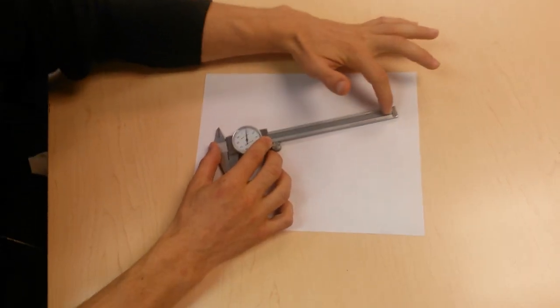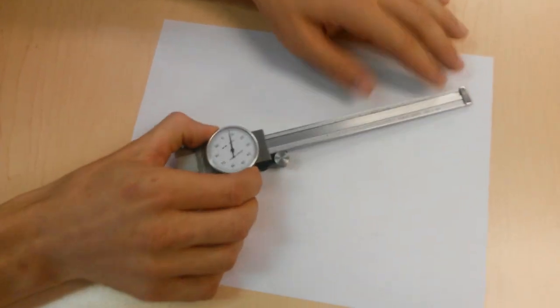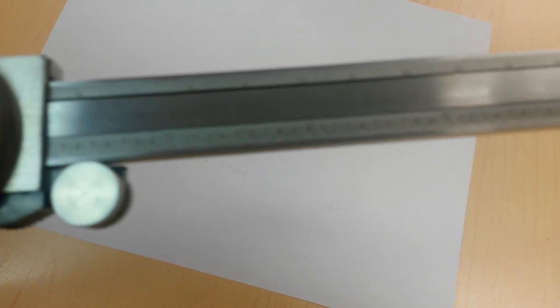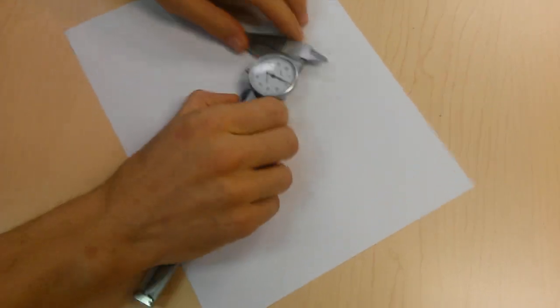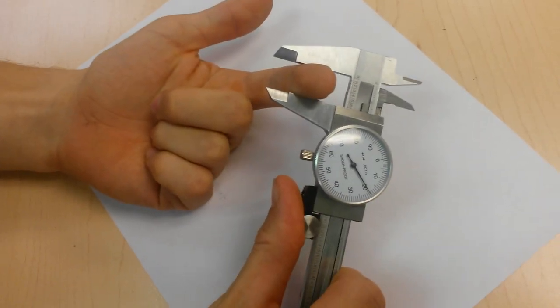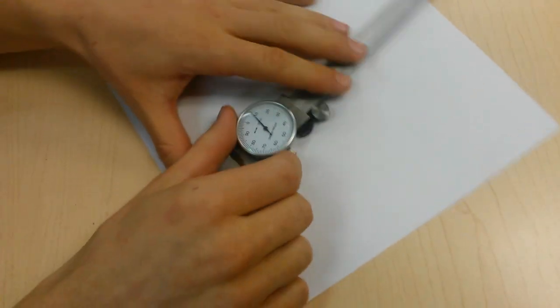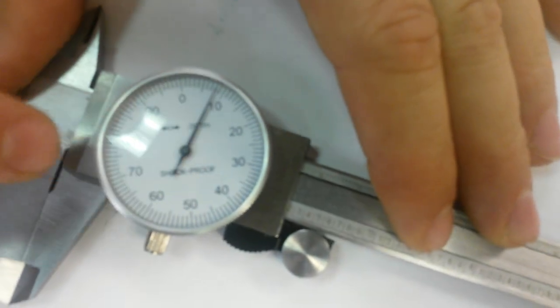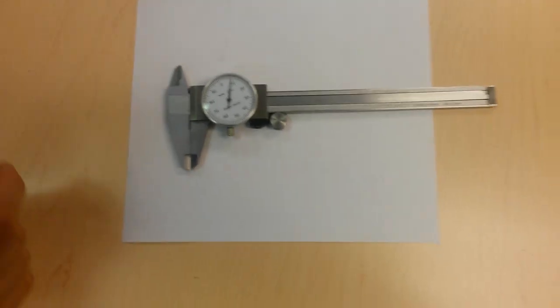This right here is called the blade. This has the numbers for measurement on there. Zoom in on that. That has the numbers on there. This is called the blade. This right here is the actual calipers part. So you can stick something in there and measure it and you can see how big it is. This is the calipers right here and then this right here is the dial and it's got the needle on there. So those are the three most important parts.